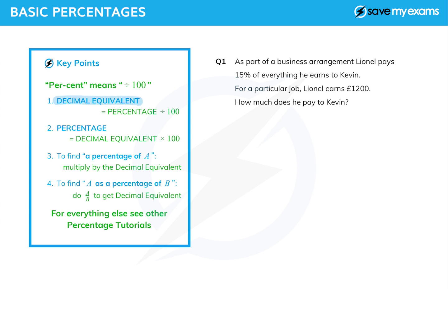One thing we're going to need to know about is the decimal equivalent of a percentage. It's a very useful thing, and that is the percentage divided by a hundred. Fairly clearly, if you want to find the percentage from the decimal equivalent, you do the decimal equivalent times a hundred. You should be able to convert freely between percentages and decimal equivalents — they are in fact the same thing.